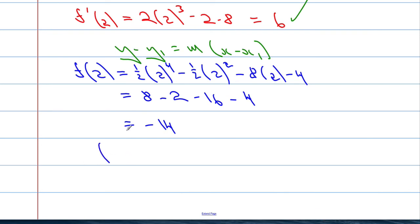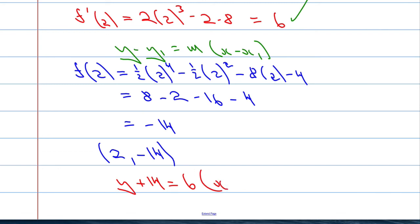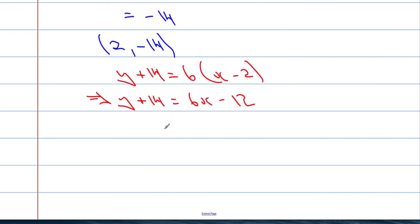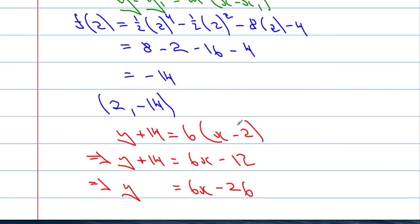So finally using the formula y − y₁ = m(x − x₁): y₁ is −14 so y + 14 = 6(x − 2), which gives y + 14 = 6x − 12. Writing in the form y = mx + c: y = 6x − 26. That's the equation of the tangent to the curve when x = 2. And that's it for this video — hopefully you found it useful. I'll be back again with another video soon. All the best and take it easy.